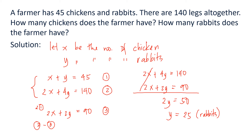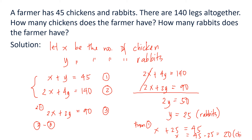To solve for the number of chickens, we can choose either Equation 1 or Equation 2. Substitute y = 25 and solve for x. Let us choose Equation 1: x + y, that is 25, equals 45. So we have 45 minus 25, which is equal to 20. Therefore x is equal to 20, and from our representation, x is the number of chickens. So we have 20 chickens and 25 rabbits.